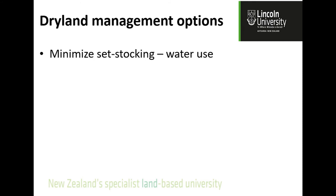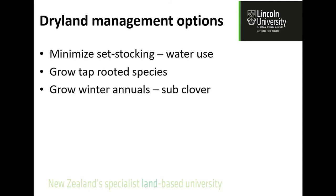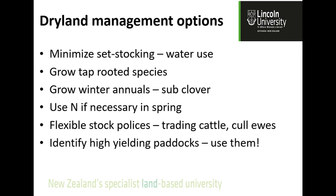Our dryland management options: minimize set-stocking. Allow pastures to reach three metres of green leaf area per metre of ground to intercept all available light, stop soil evaporation, and force water through the plant as transpiration — that's the key to growing more pasture in a dryland system. Use tap-rooted species and winter annuals because they grow when other plants don't. Nitrogen in spring is not the devil's tool — it's required to grow leaf area, and without leaf area you don't capture sunshine. Identify the ten high-yielding hectares on your farm, put them into red clover and plantain or lucerne, increase stocking rate there, and let the other 90 hectares build pasture. Identify your legume and manage it.